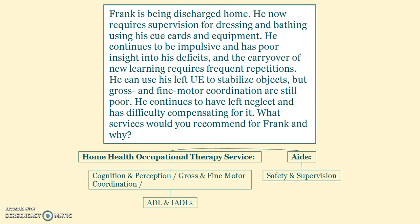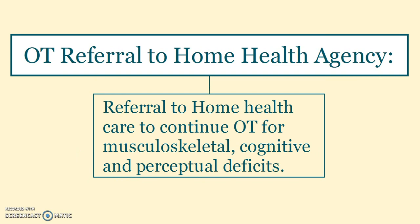Regarding discharge planning: Frank is being discharged home. He now requires supervision for dressing and bathing using cue cards and equipment, continues to be impulsive with poor insight into his deficits, and carryover of new learning requires frequent repetitions. He can use his left upper extremity to stabilize objects, but gross and fine motor coordination are still poor. The main service recommended is home health occupational therapy for cognition and perception, gross and fine motor coordination, and ADL and IADL training, along with an aide for safety and supervision and a referral to a home health agency to continue OT for musculoskeletal, cognitive, and perceptual deficits.